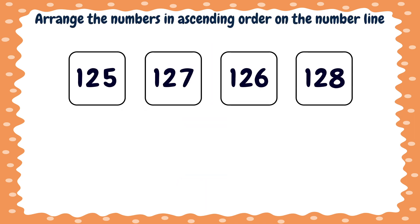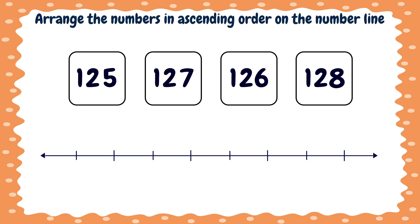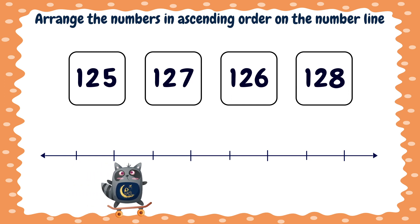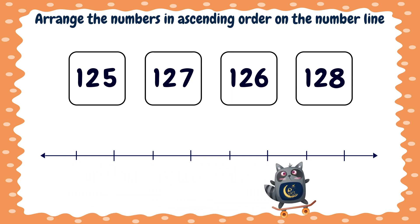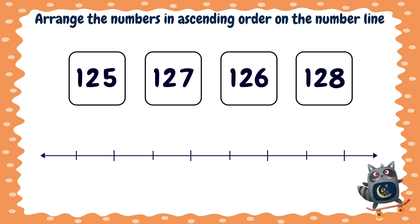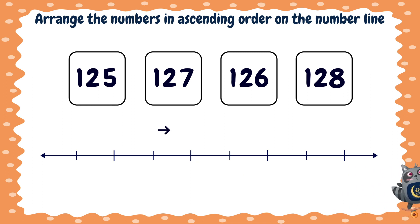Now, can we arrange these numbers in ascending order on the number line? Of course we can. First, we must know that when arranging in ascending order on the number line, we will put the numbers from left to right. We will figure out the smallest number in these numbers, so we will determine the place values.